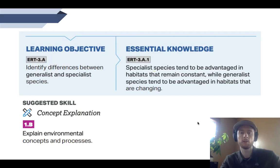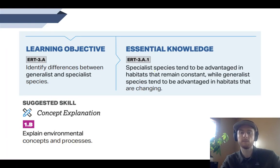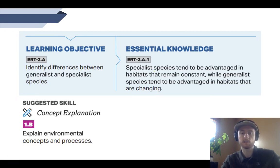Here are our learning objectives, essential knowledge, and the skills we'll be practicing today. Our objective is to be able to identify the difference between generalist and specialist species. Our essential knowledge is that specialist species are advantaged in habitats that remain constant, whereas generalist species are advantaged in habitats that are constantly changing. The skill we'll practice is explaining an environmental concept.